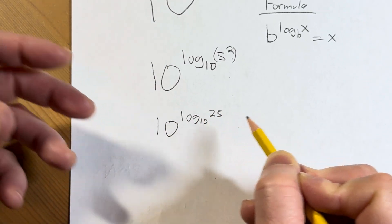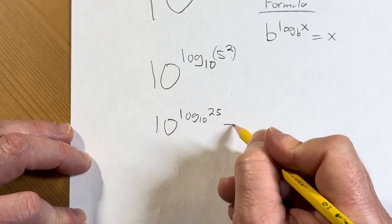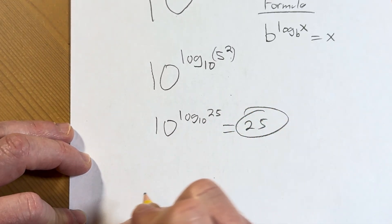And I just want to put the parentheses there, but you know, you don't have to. This is equal to 25. And that would be the answer.